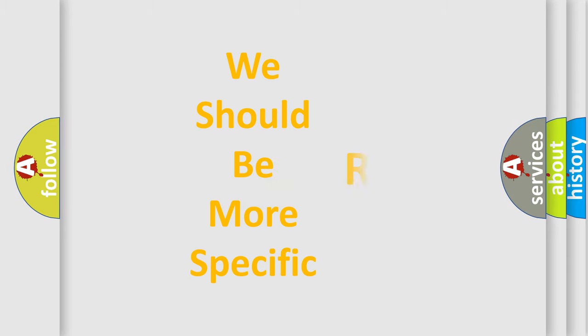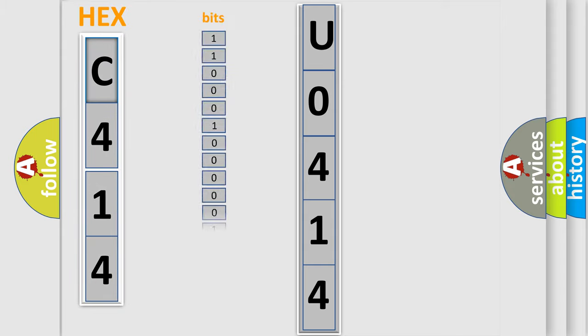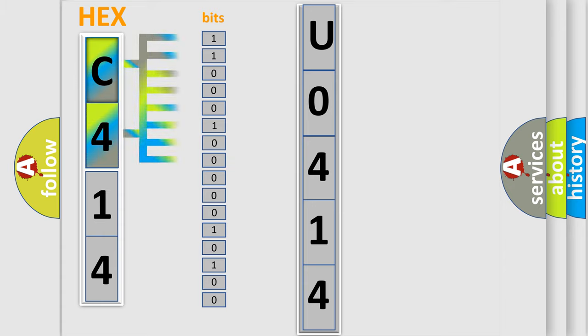The following demonstration will help you look into the world of software for car control units. The error code is split into two bytes consisting of 16 bits. One bit is the basic unit that each computer works with. The bit has two logical states.